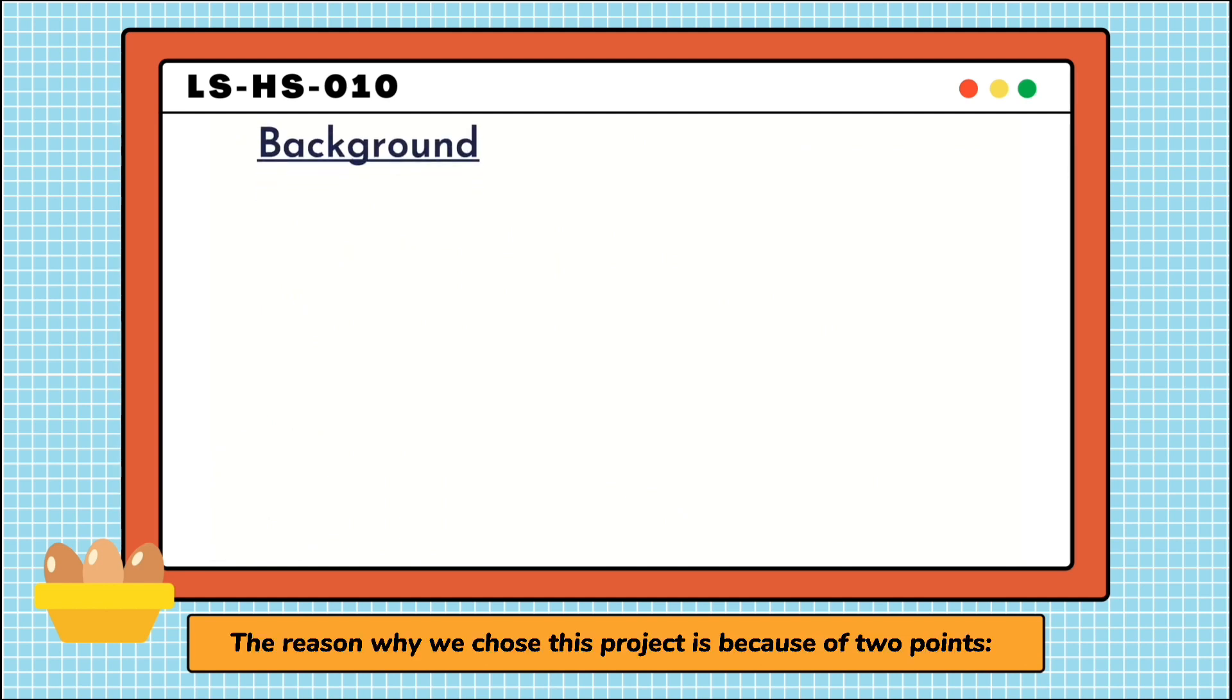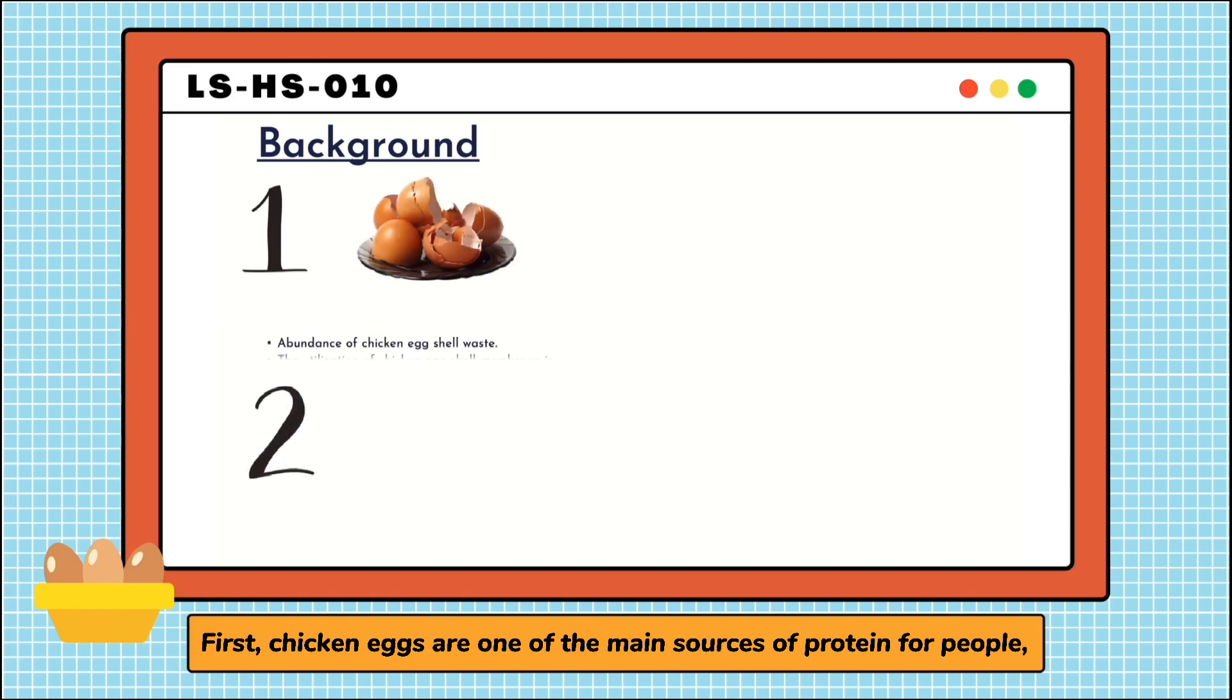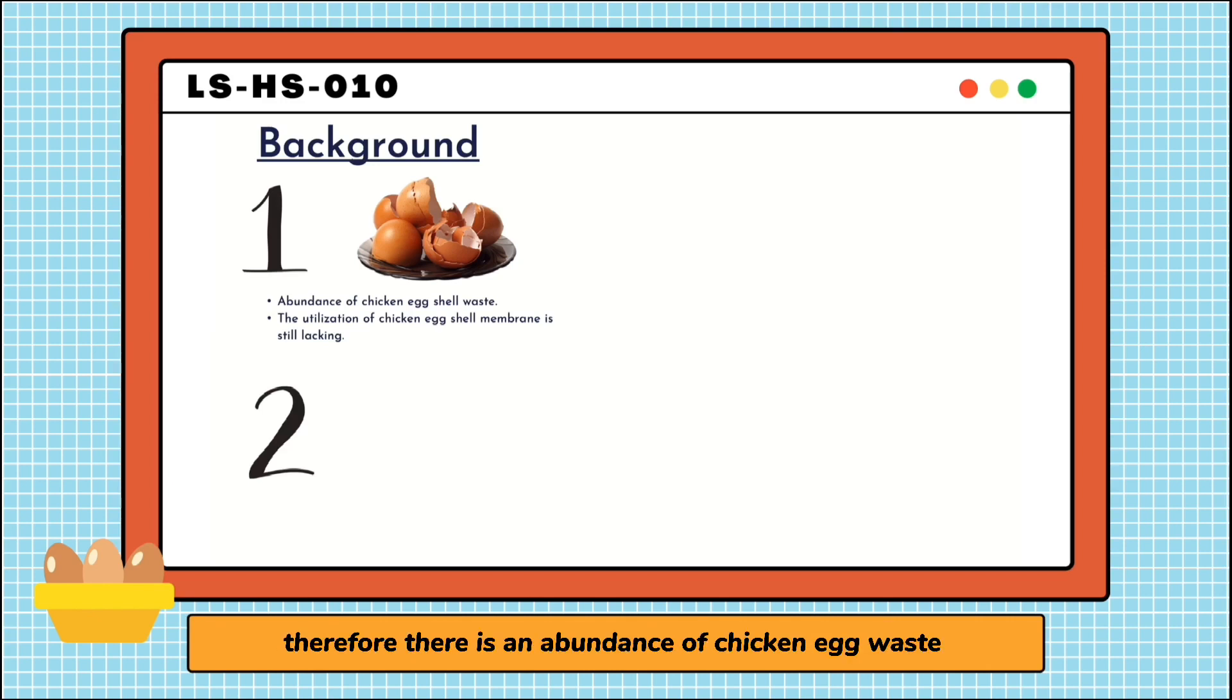The reason why we chose this project is because of two points. First, chicken eggs are one of the main sources of protein for people. Therefore, there is an abundance of chicken egg waste from many households and restaurants. It is quite known that the eggshell waste can be used as compost for plants. However, not many people know that we can also take advantage of the membrane from the eggshells. The eggshell membrane has very good absorbent characteristics. Considering this, we decided to make an innovation using it.